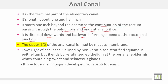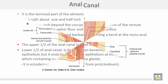The upper half of the anal canal is lined by mucous membrane, while the lower half of the anal canal is lined by non-keratinized stratified squamous epithelium. But it ends by keratinized epithelium at the perianal epidermis, containing sweat glands and sebaceous glands. It is ectodermal in origin as it developed from the proctodeum in the embryo.